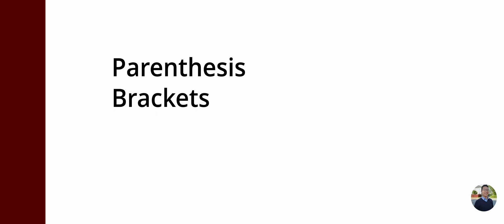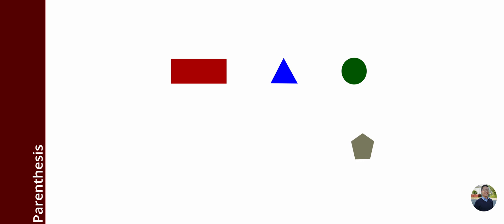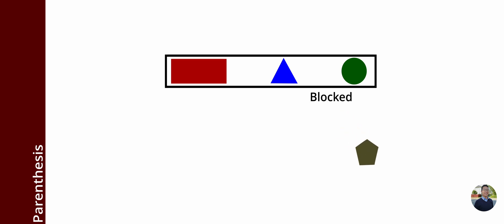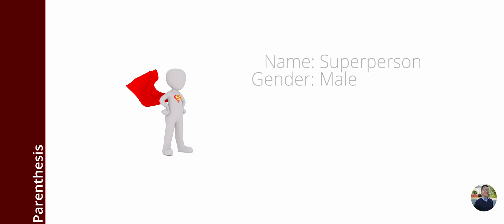Next, we'll talk about the differences between parentheses, brackets, and braces. Parentheses are used to make tuples. A tuple is like a list of things that you can't change. Imagine you have a list of your favorite colors — red, blue, and green. You can look at the colors in the tuple and talk about them, but you cannot change them or add any new colors. For example, a game might use a tuple to store a character's name, gender, etc., that will stay the same throughout the game.